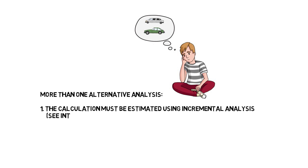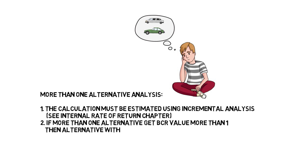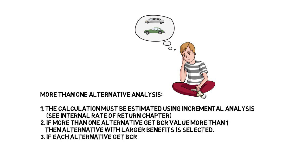BCR can be applied to so many problems, but for more than one alternative the calculation is not as easy as for a single alternative. The calculation should use incremental analysis. If two alternatives both have a BCR value larger than one, then the alternative with the larger benefit is selected. If both have BCR less than one, then the alternative with the less cost is selected.